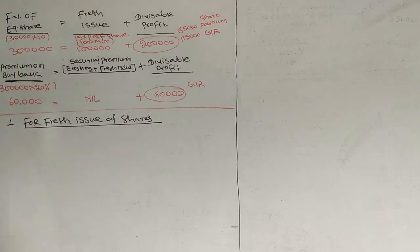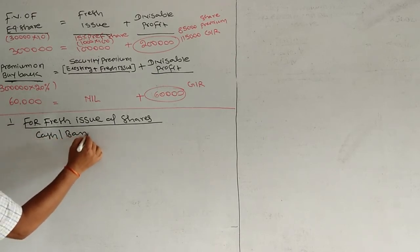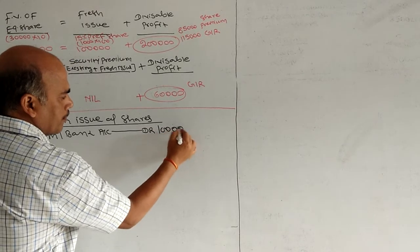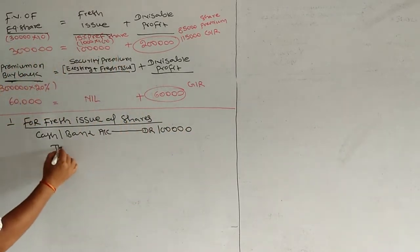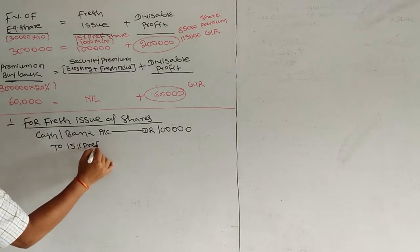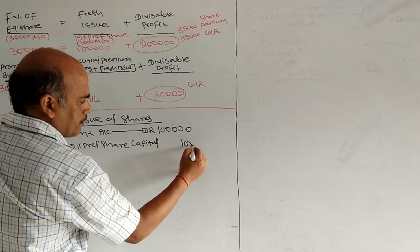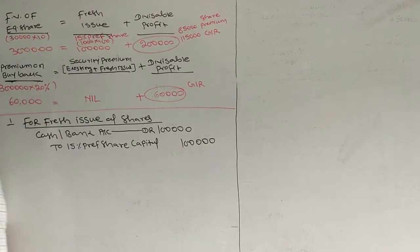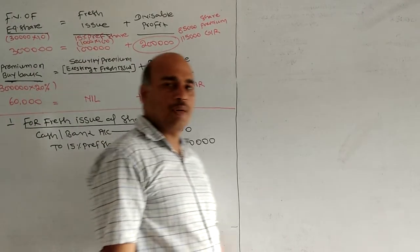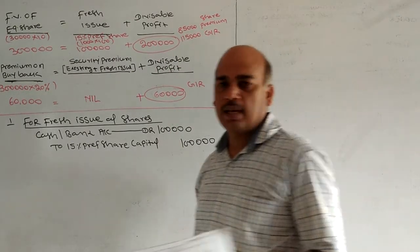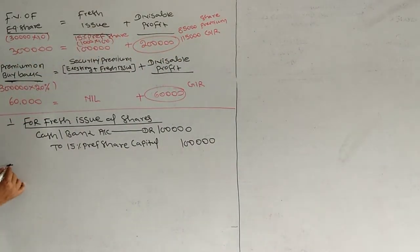First, fresh issue of shares. Students, for my fresh issue, definitely it will be cash. Entry: Cash and Bank Account debit, to 15% Preference Shares Capital. Being 1,000 15% preference shares issued at par - 1 lakh rupees.